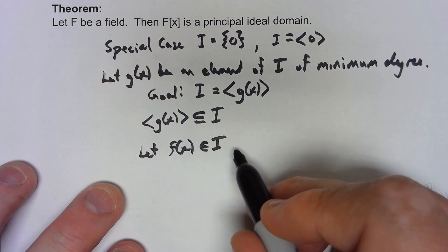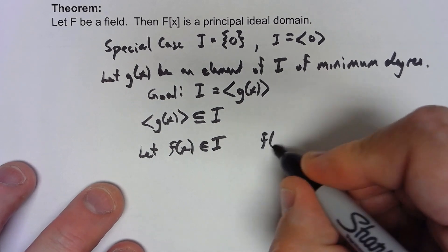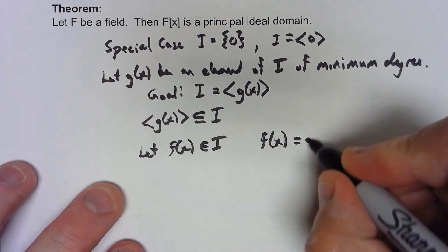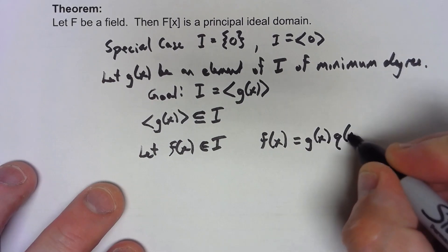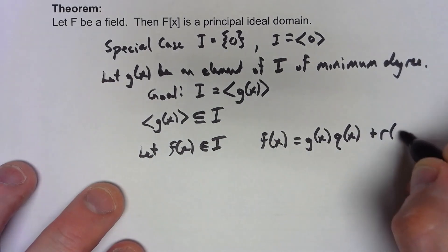By the division algorithm, f(x) has to equal g(x) times q(x) plus some r(x).